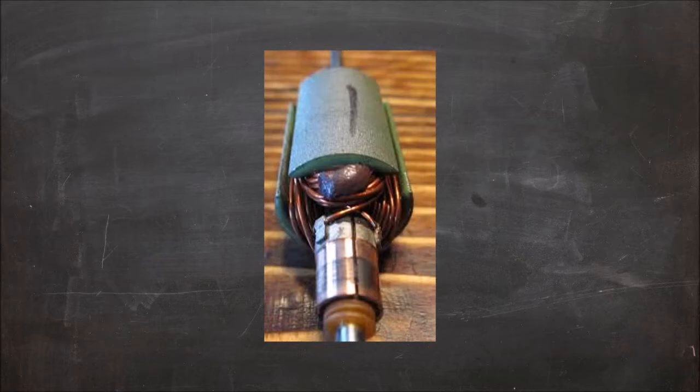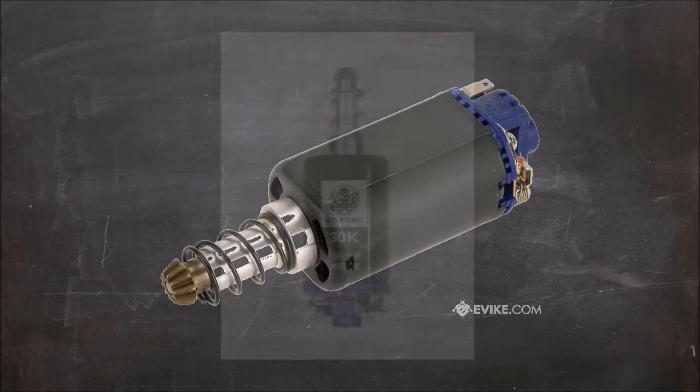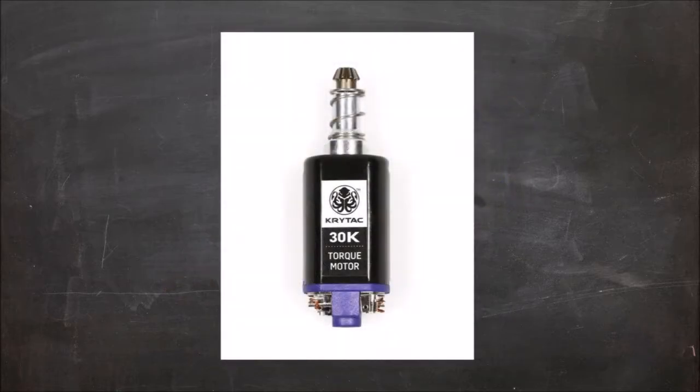AEG motors use a conductive material wrapped in copper wiring, and when current runs through the electromagnet, they rotate the armature, causing the pinion to rotate. Most stock motors and low-quality motors use ferrous-based materials that function well enough. For aftermarket motors, look for neodymium magnets—a rare earth metal that performs several times stronger and more efficiently than ferrous-based magnets.